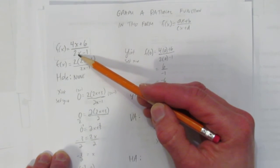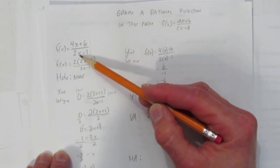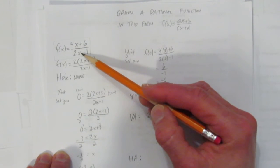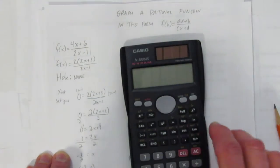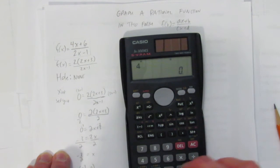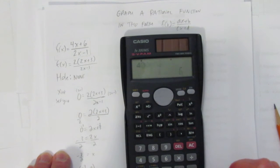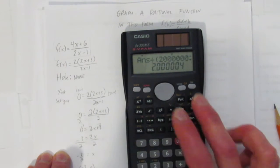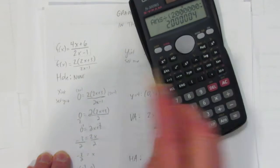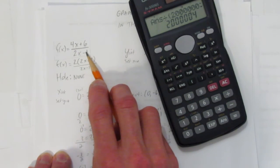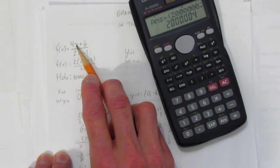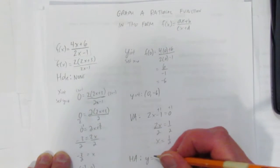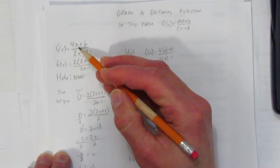If you subbed in a million, you'd get about 4,000,000 over 2,000,000. Do you see the bigger number you sub in, the less these matter? Let me show you with the actual numbers. Sub in 1,000,000, you'd get 4,000,006 divided by about 2,000,000. Look what you get, basically 2. As you sub in big numbers, these terms don't matter. Just the coefficients matter. You basically get 4 divided by 2.